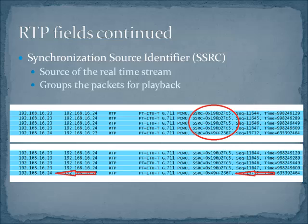Next up we have the synchronization source identifier. This is the creator of this particular real-time or voice stream. All of the packets from the source identify that source, and so what we can do is organize or group the packets for playback. At the bottom of this selection here we can see that the source IP address changed, and so the synchronization source identifier also has to change.